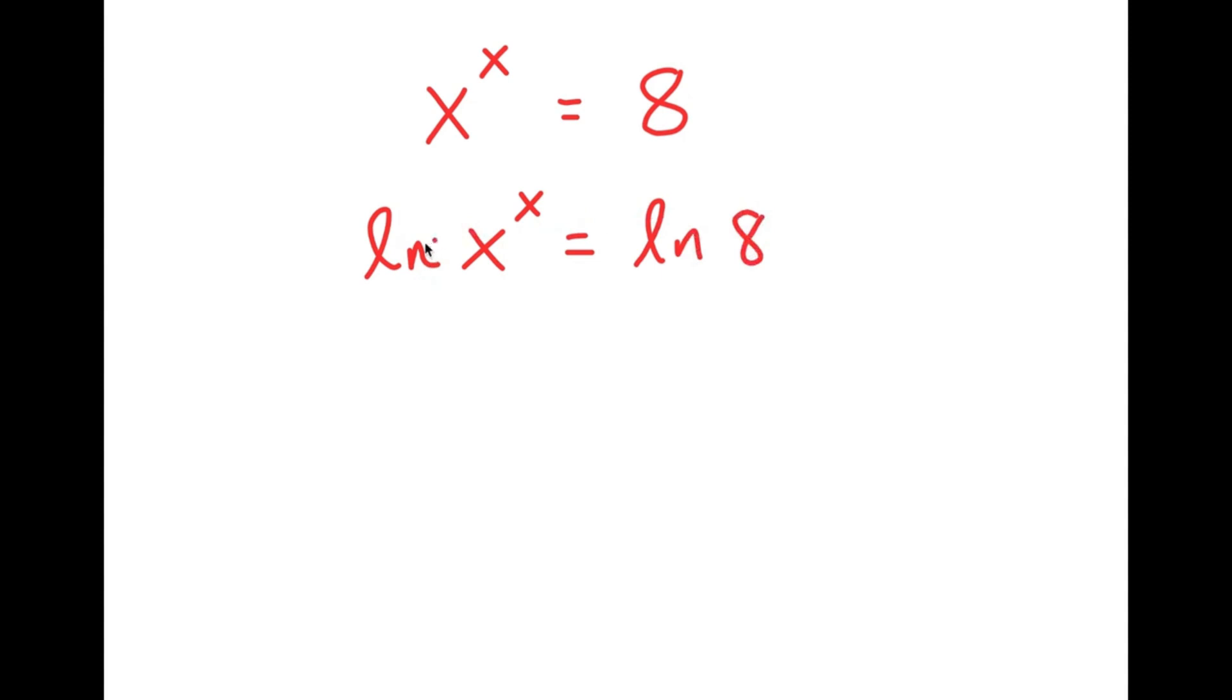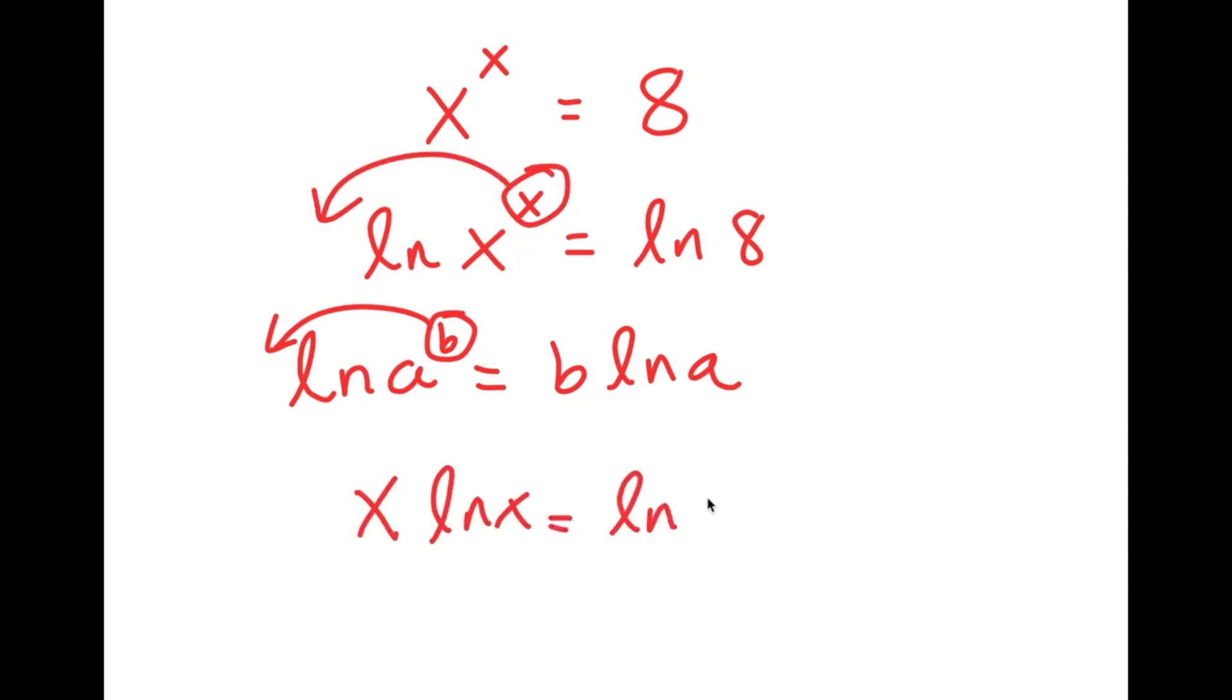And a helpful property that comes with logarithms is that if I have something in the form ln a to the power of b, I can move this exponent to the front, so this turns into b times ln a. So in this case, I have ln x to the power of x, and I can move x to the front. So now I get x times ln x is equal to ln 8.